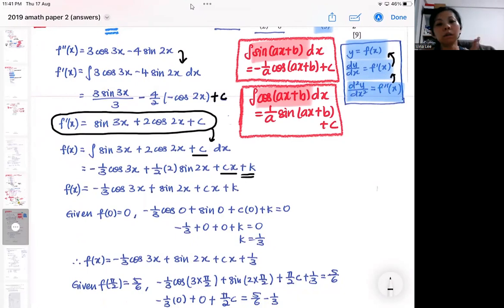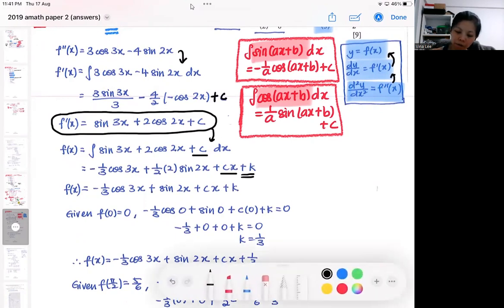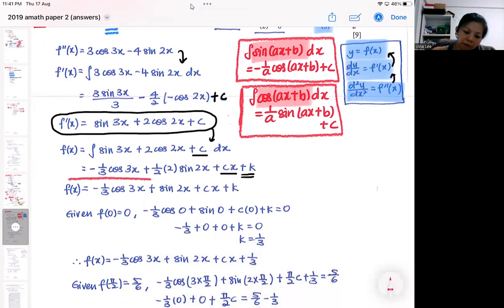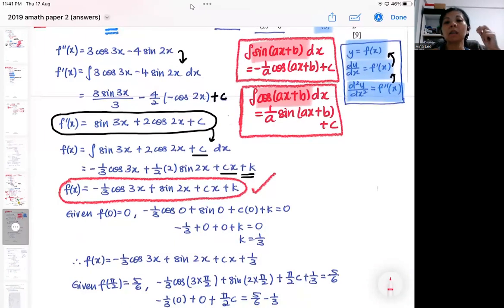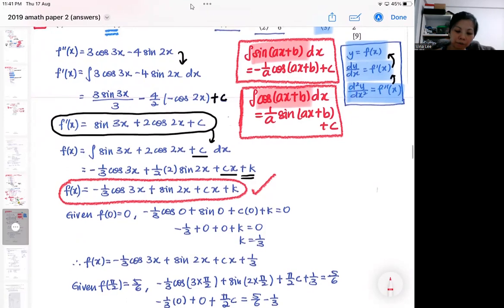So the whole thing looks very confusing because you already have two constants. So by the time you integrate twice, you will come to the expression of f(x). So by the time you integrate twice, you will have gotten something like this. So your job now is to find the unknown carefully. So they gave us two pieces of information.